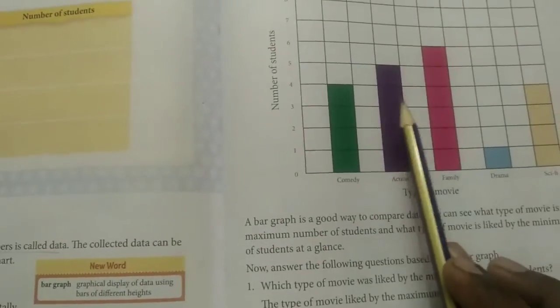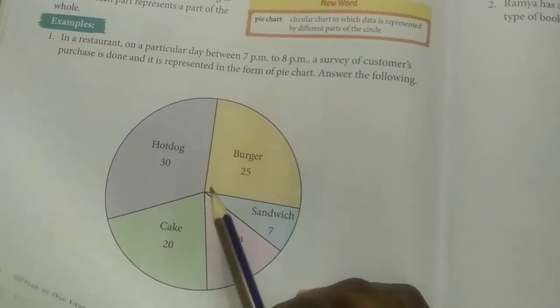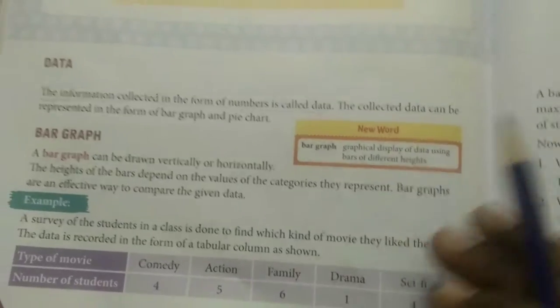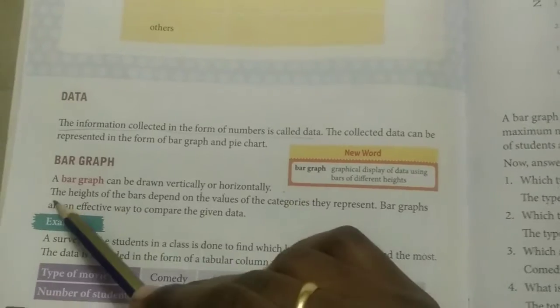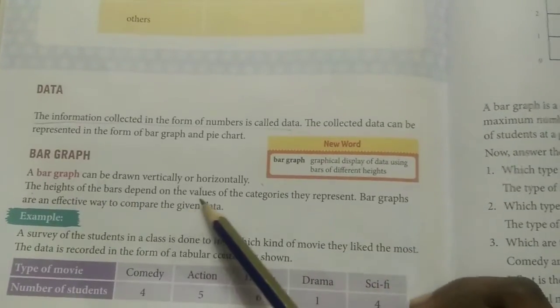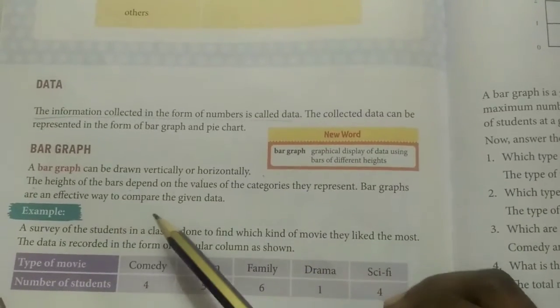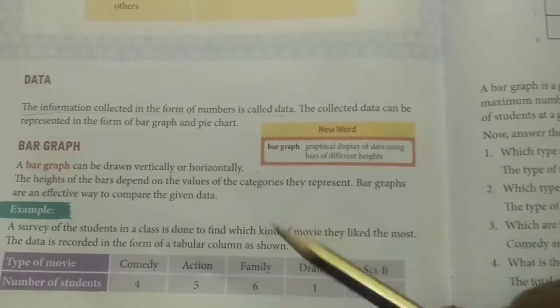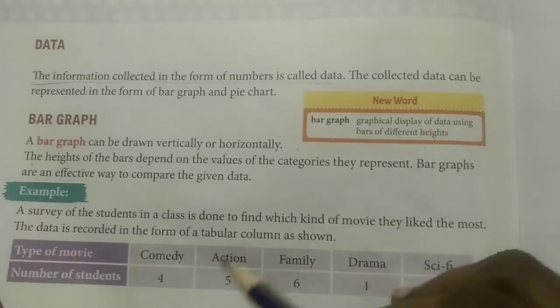In this lesson we're going to study two sections: bar graph and pie chart. Both are very interesting and very simple. A bar graph can be drawn vertically or horizontally. The height of the bars depends on the value of the categories they represent. Bar graphs are effective for comparing the given data.